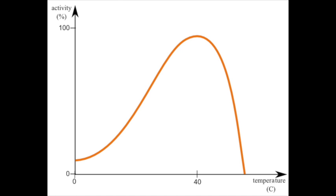At the top of the curve, there is an optimum temperature — make sure you use that word in the exam — which is the temperature at which the enzyme works best. After exceeding that optimum temperature, the rate of reaction drops off sharply. The word we use to describe this is denaturation — the enzyme becomes denatured, meaning the active site has changed shape and the substrate can no longer fit in. Never describe the enzyme as 'dying' — you won't get marks for that. The correct word is denatured.